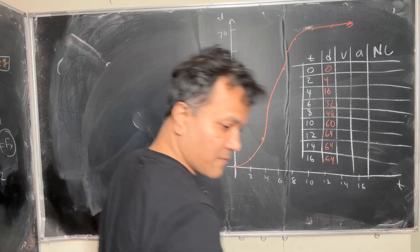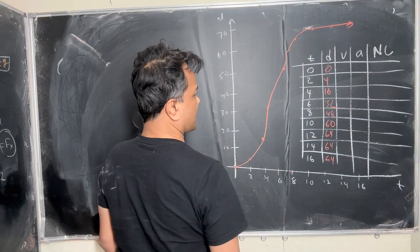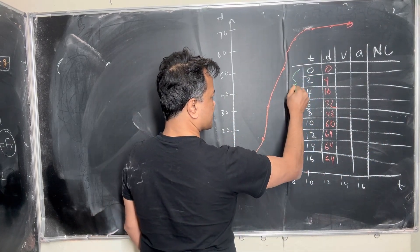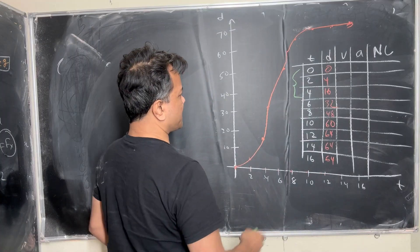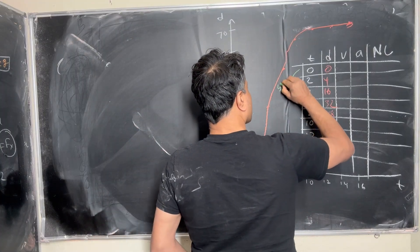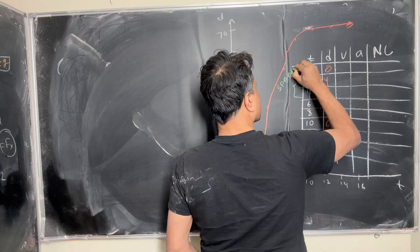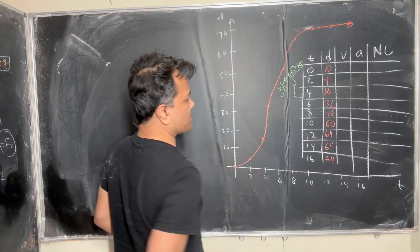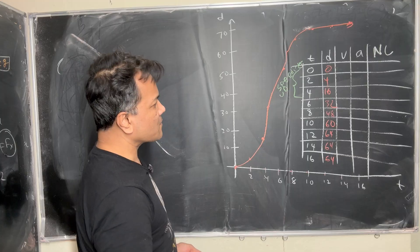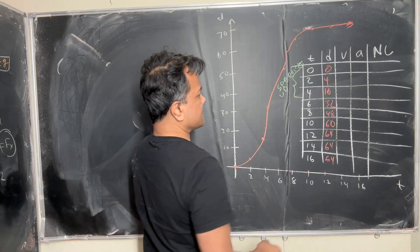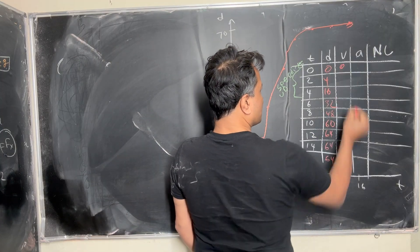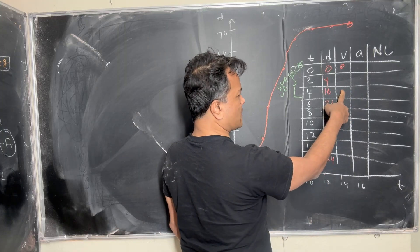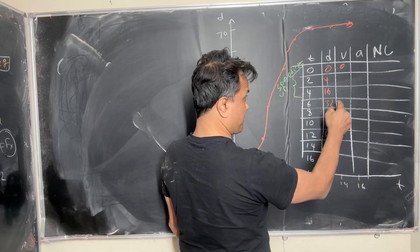Looking at the graph, what I notice is that from zero to four seconds it's speeding up. From zero to four seconds is speeding up — what does that mean? Velocity is zero here, but not zero here, so it is speeding up.